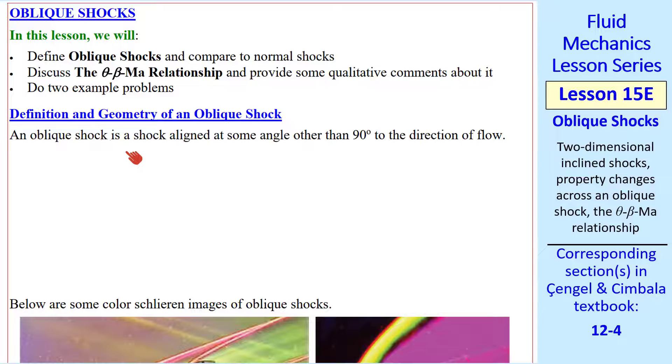First, the definition and geometry of an oblique shock. Simply put, an oblique shock is a shock aligned at some angle other than 90 degrees to the direction of flow.